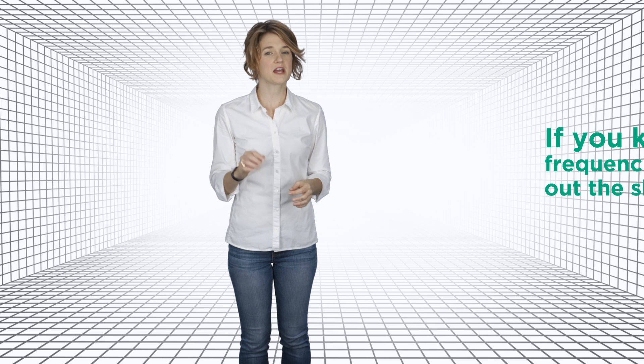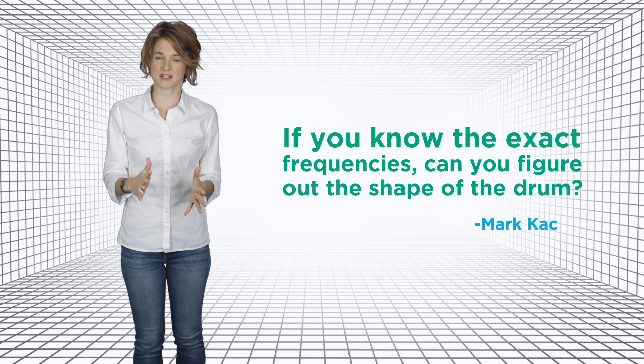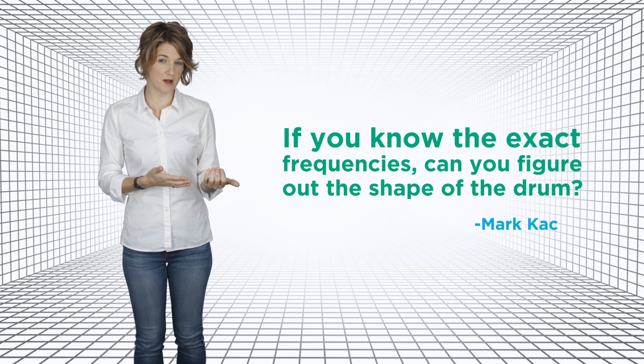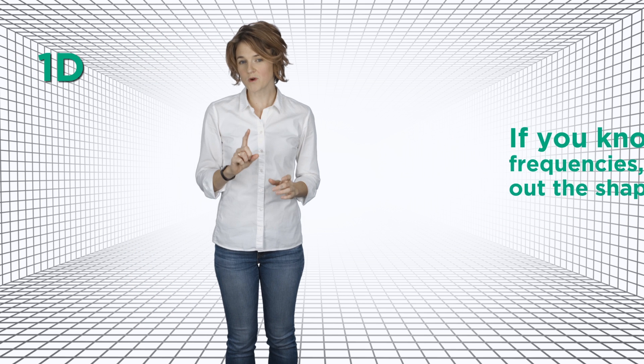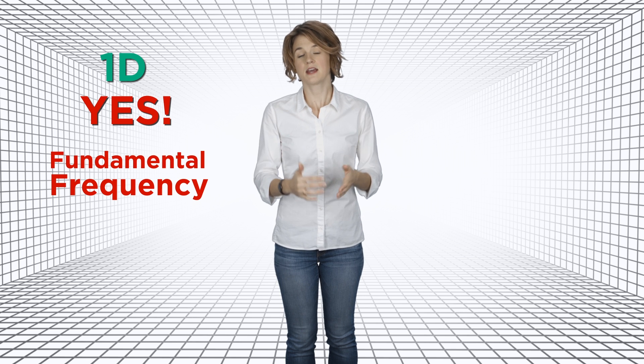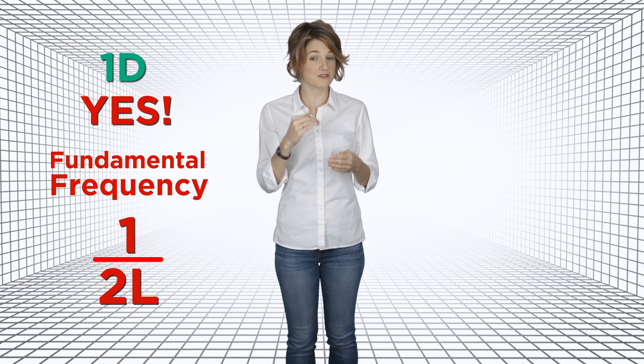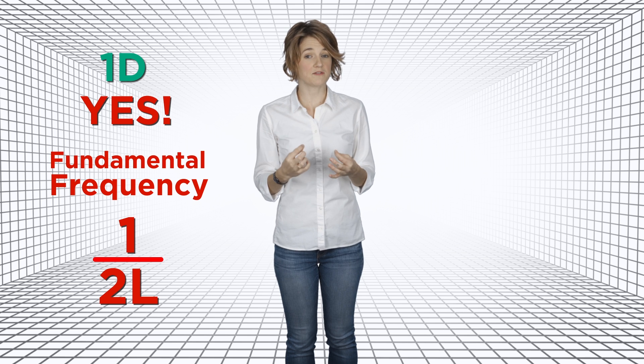But Mark Katz asked the reverse question. He wanted to know, if you know the exact frequencies that a drum produces, can you figure out the shape of the drum? Remember, in one dimension, the answer was yes. The lowest, or fundamental frequency, is always 1 over 2L. So 1 half divided by the fundamental frequency will give you the length. But the shape of something in one dimension is simple. It's just the length of the string. There's so many more possibilities in two dimensions.